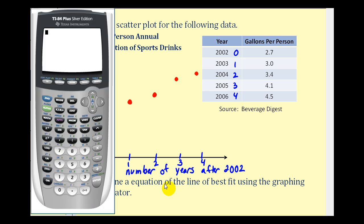So the first thing we're going to do is enter in the data. We'll press stat, enter. If you have any old data in here, you can go to the top of the column, press clear, and then enter, and it will clear the entire column.